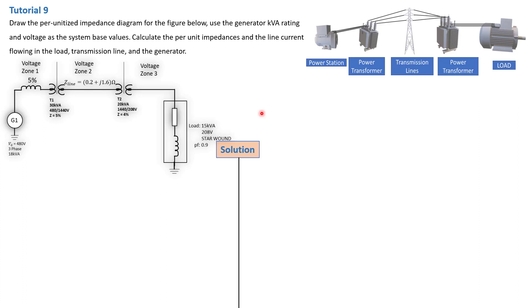Hey guys, welcome back to this per unit tutorial. This is part 2 of tutorial 9. In the previous tutorial, part 1, we were able to calculate the per unit values of all the electrical components that make up this electrical network. So we have a generator, a transformer, a transmission line, another transformer stepping down, and we have the load connected.